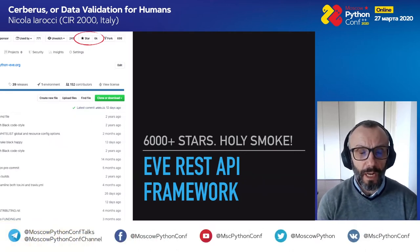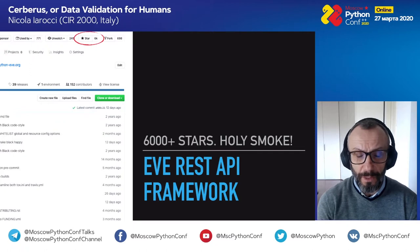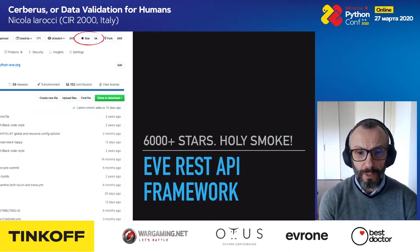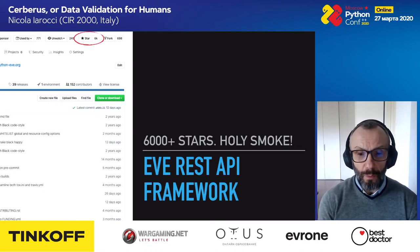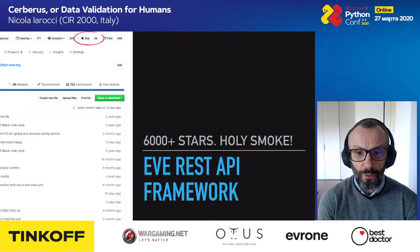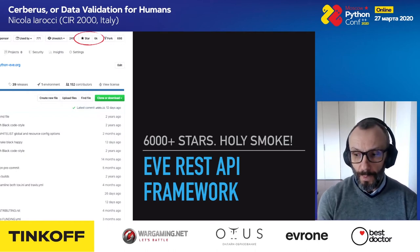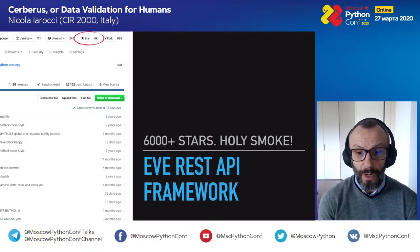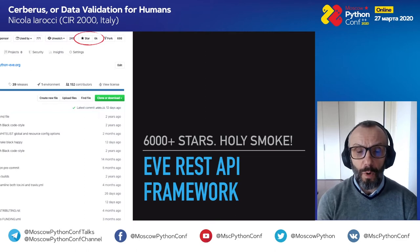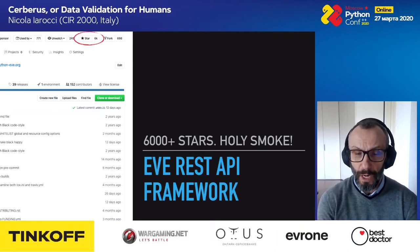Before we dive into Cerberus itself, I want to take a quick diversion. EVE is a REST API framework I built — it has about 6,000 GitHub stars. Cerberus was actually born as a by-product of EVE: I needed something to validate data coming into the framework, so I started working on a data validation layer. A few months later I decided to detach it from the framework and release it as a standalone open source project, because most people want to do data validation regardless of the REST API framework they use.